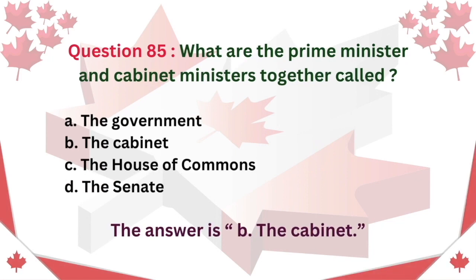Question 85: What are the Prime Minister and Cabinet Ministers together called? A. The Government. B. The Cabinet. C. The House of Commons. D. The Senate. The answer is B. The Cabinet.